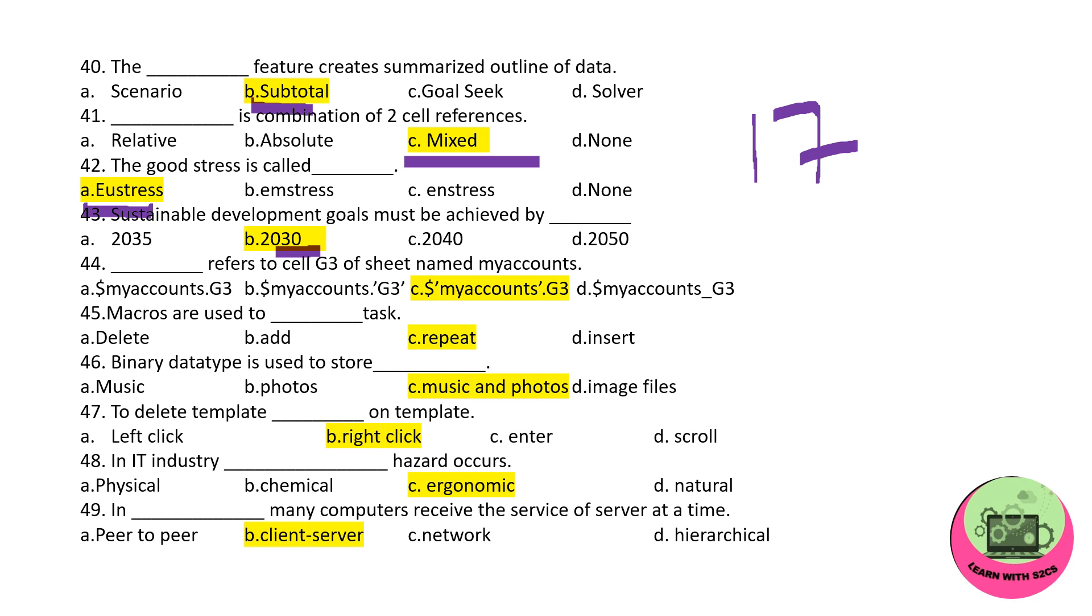Dash refers to cell G3 of sheet named My Account. So now how are you going to refer it? You will be writing in this way: dollar followed by single quotes. Under those single quotes will be writing the sheet's name, and then dot, and then the cell. Macros are used to repeat the task. Binary data type is used to store both music and photos. Remember, if you get this question they might give you confusing options, so remember both music and photos. To delete template, we will be right-clicking on the template and the template will get deleted.